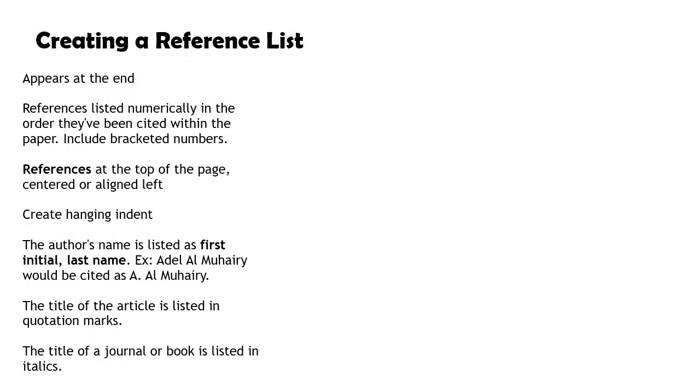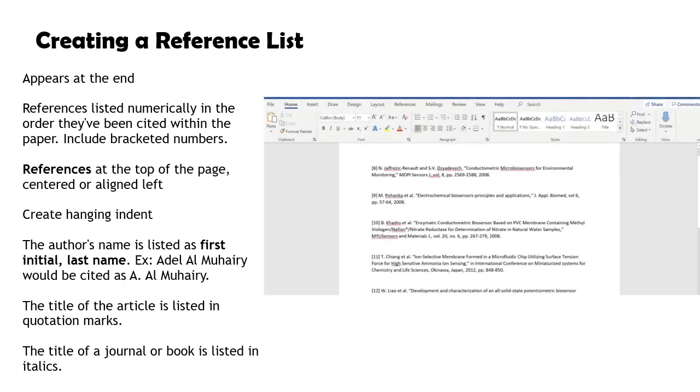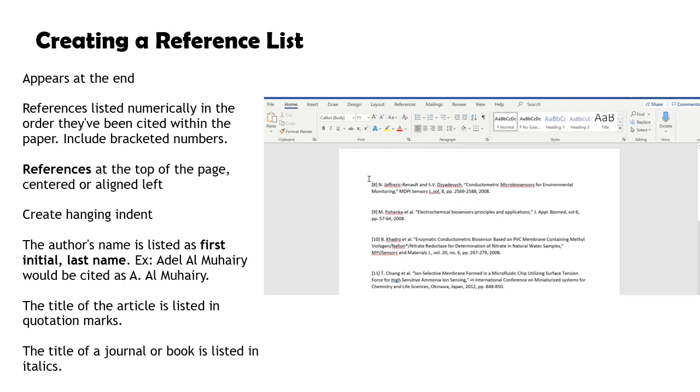Creating a reference list. The reference list appears at the end of your paper and provides the full citations for all the references you have used. List all references numerically in the order they've been cited within the paper and include the bracketed number at the beginning of each reference.